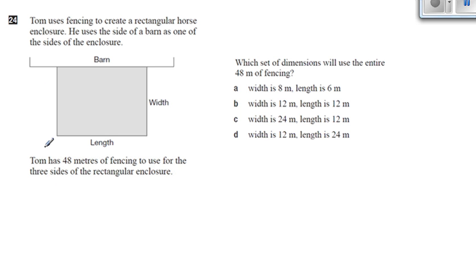Question 24. Tom uses fencing to create a rectangular horse enclosure. He uses the side of a barn as one of the sides of the enclosure. He has 48 meters of fencing to use for the three sides of his enclosure.